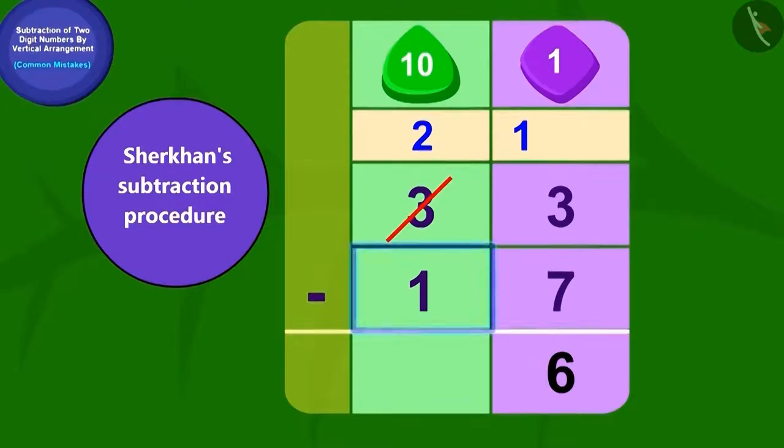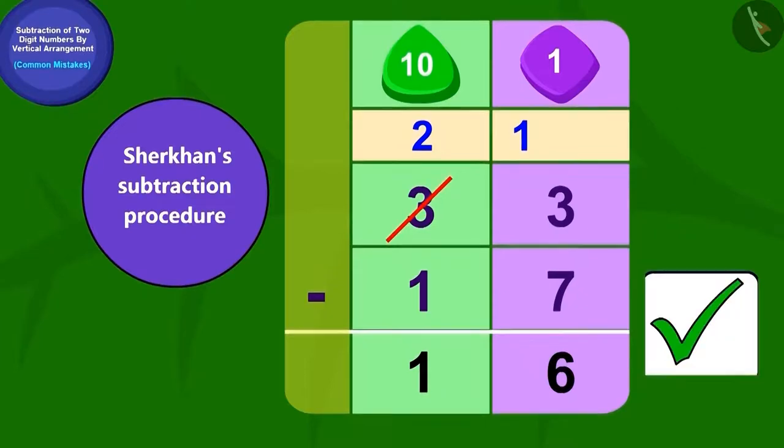And by removing one tenths from two tenths, we will be left with one tenths. Sher Khan has also written his answer like this. So his answer is absolutely correct. Now Sher Khan is ahead of Chanda by one point.